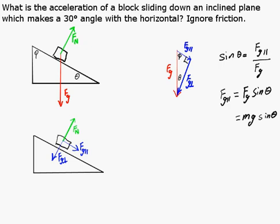Now, in this diagram, we know it's not going to accelerate perpendicular to the plane. So the force of gravity perpendicular to the plane will cancel out with the normal force, leaving a net force of Fg parallel.